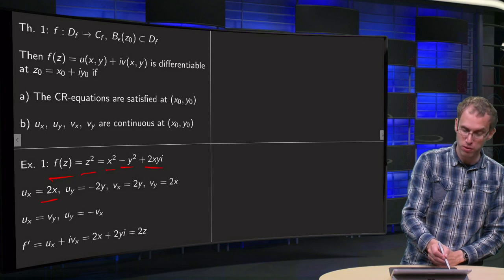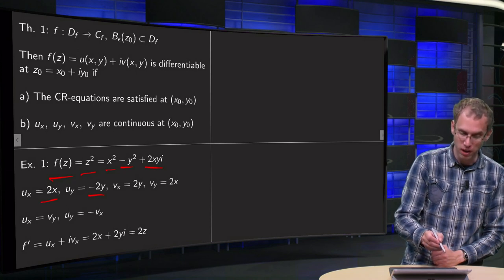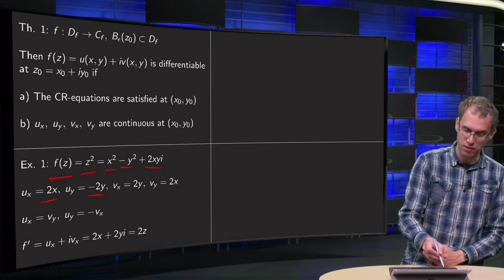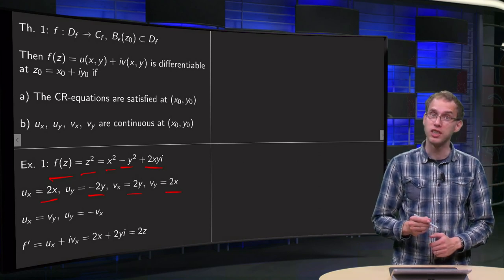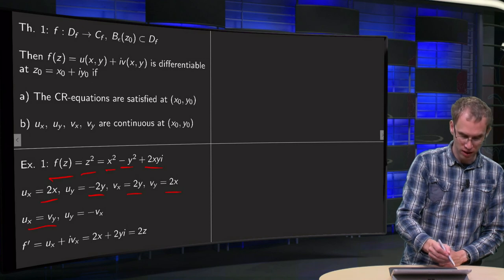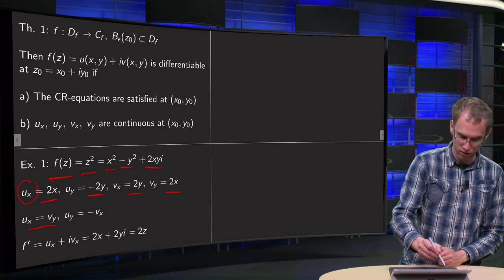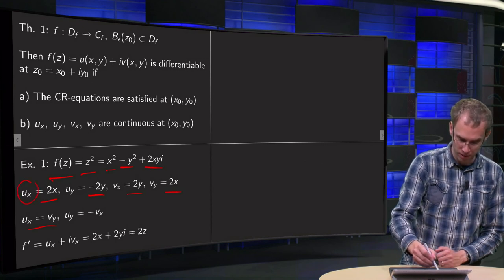ux equals 2x, uy equals minus 2y, vx equals 2y and vy equals 2x. So let's check, we need ux to be equal to vy, so ux equals vy, so that's correct.